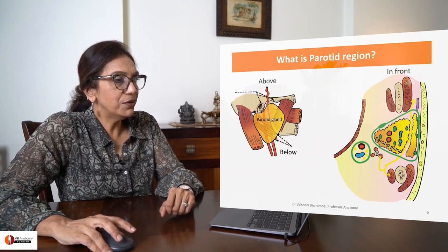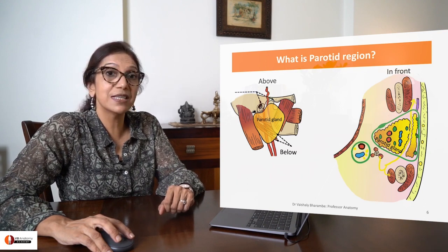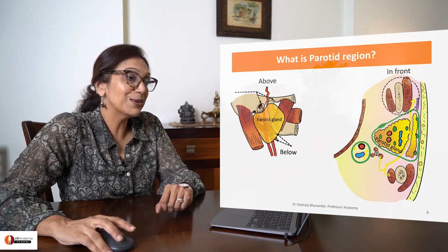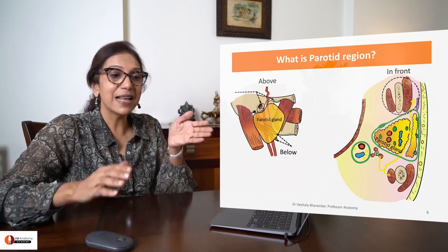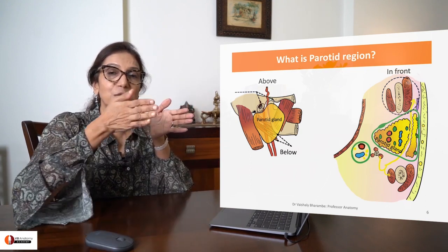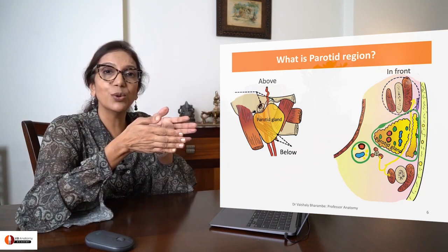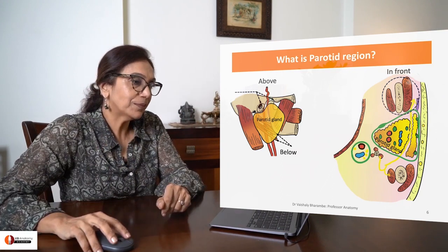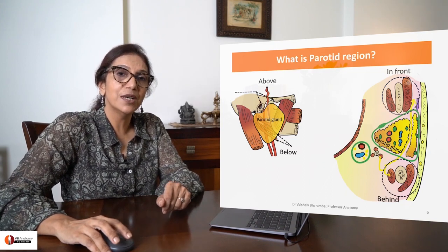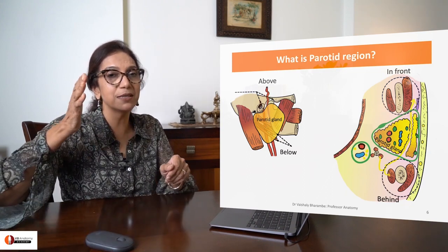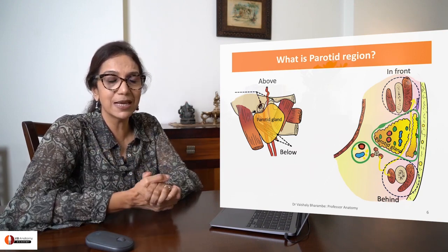The parotid region is anteriorly limited by a sandwich — how interesting is that! It's the mandible sandwiched between two muscles: the masseter on the outside and the medial pterygoid on the inside. Posteriorly, it's limited by another sandwich — the mastoid process covered by the sternocleidomastoid on the outside and the posterior belly of digastric on the inside.